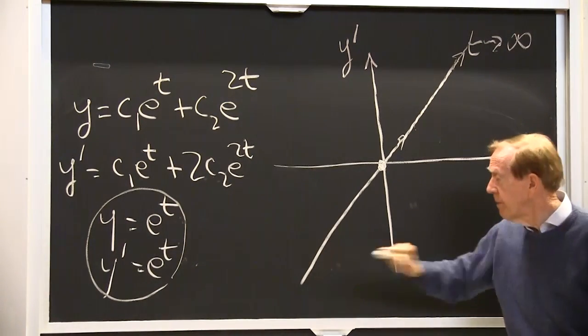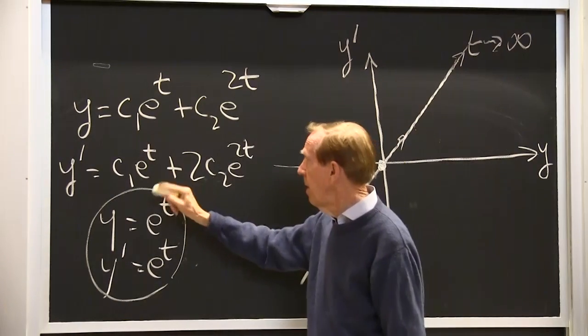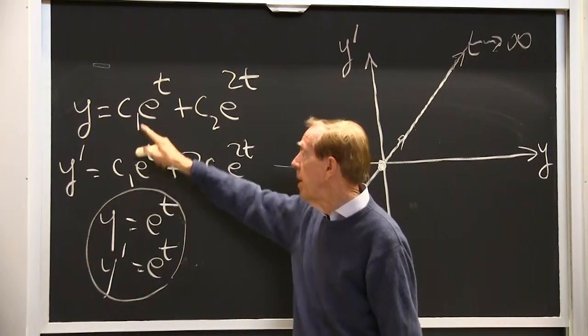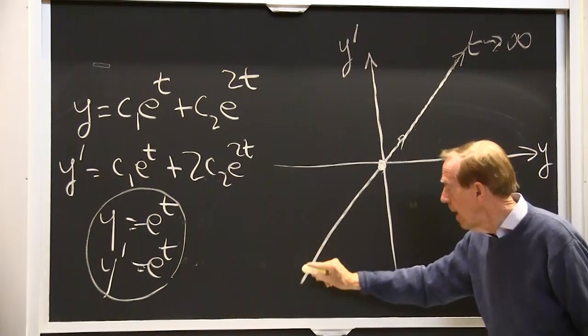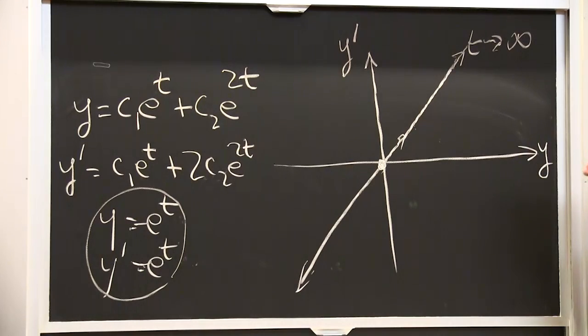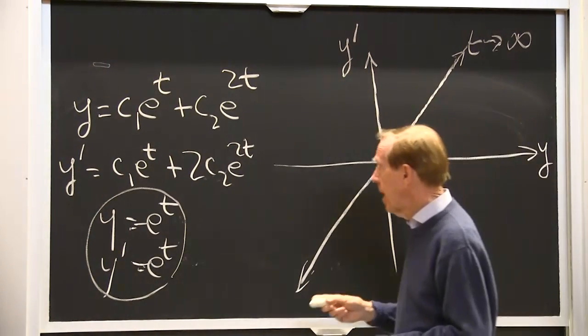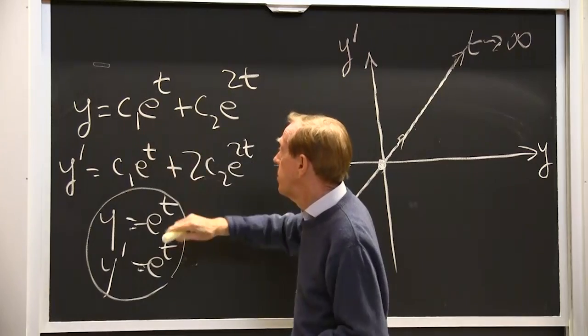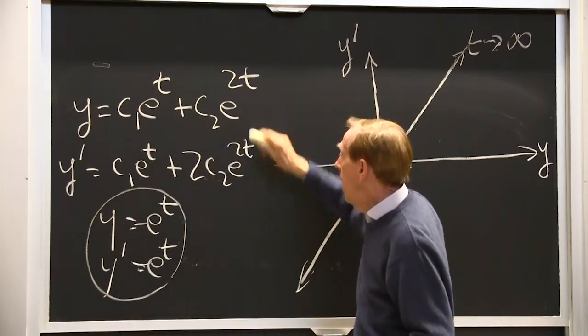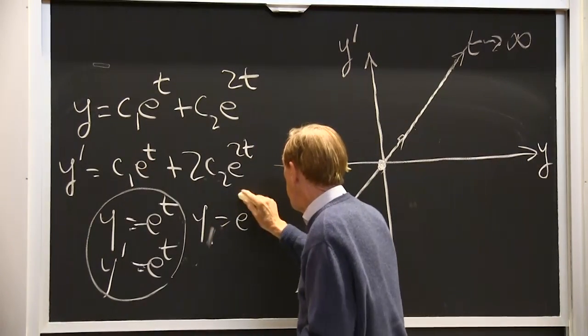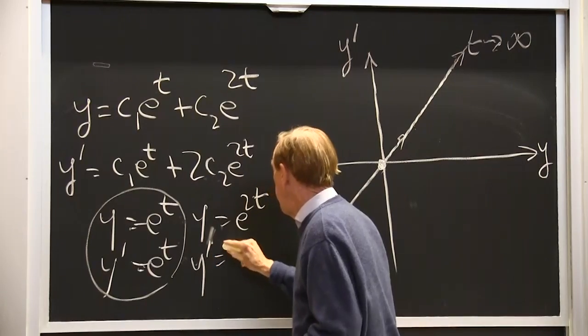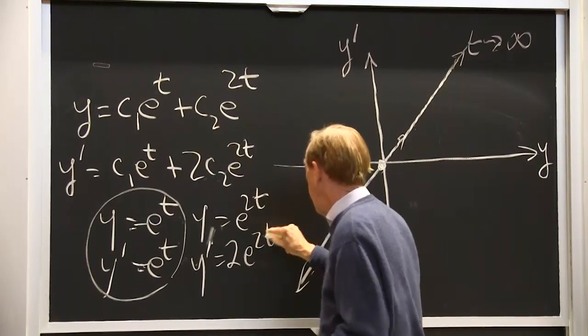What about the rest of the line? If c1 was negative, I'd have a minus there and a minus there. I would just have minuses and I'd be going out that line. That's one line in my whole plane, but not all. Now let me take as a second line c1 equals 0. Let me take y as e to the 2t. And y prime then would be 2e to the 2t.